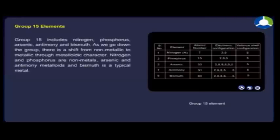Group 15 includes nitrogen, phosphorus, arsenic, antimony and bismuth.